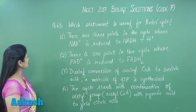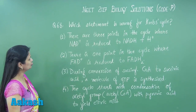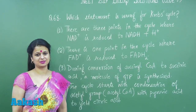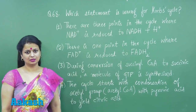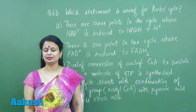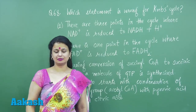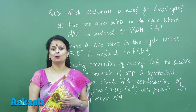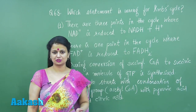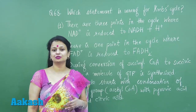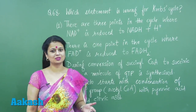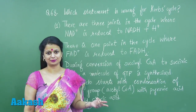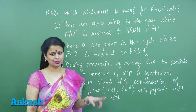In question number 68, we have to find the statement which is wrong with respect to the Krebs cycle. In one turn of the Krebs cycle, there is production of 3 NADH, 1 FADH2, formation of 1 GTP through substrate level phosphorylation, and 2 carbon dioxide.